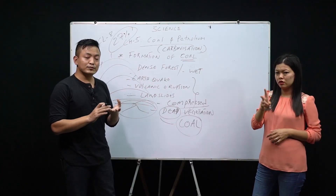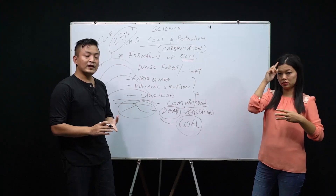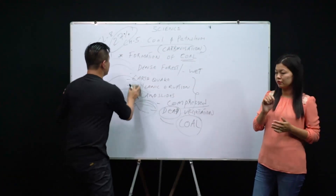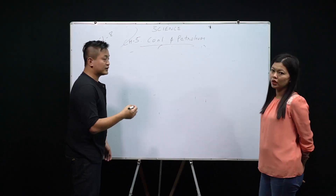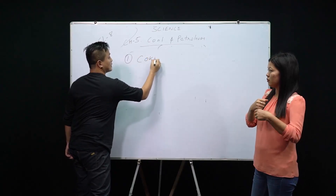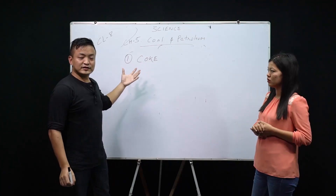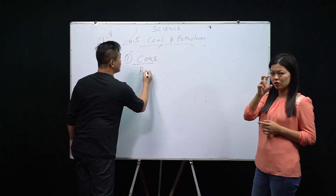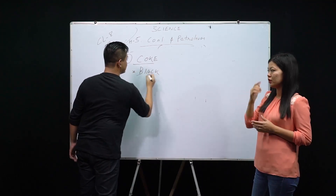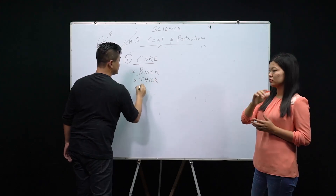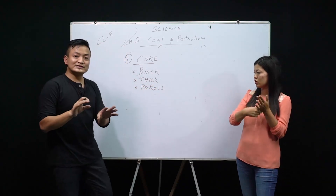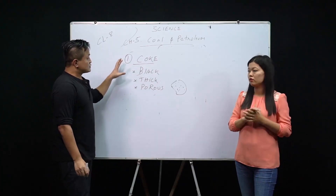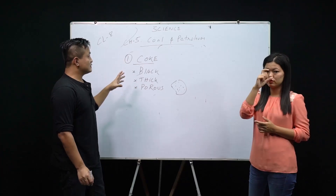Coal has three very important products: coke, coal tar, and coal gas. The first product is coke — this is not the soft drink; it is different. Coke is a product of coal, so it is black in color, thick, and porous. Porous means there are small holes inside it.